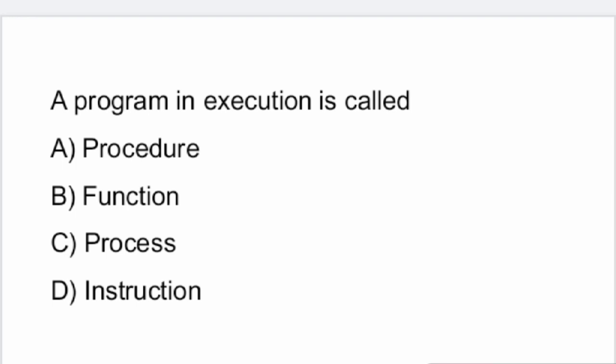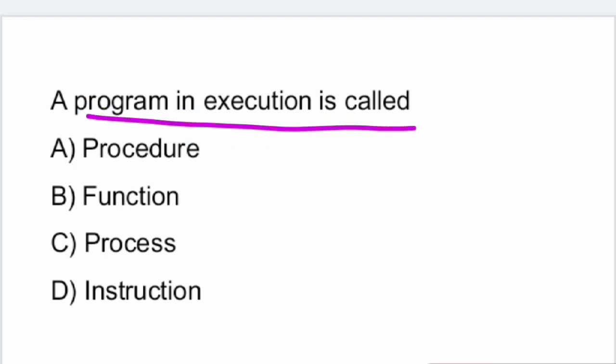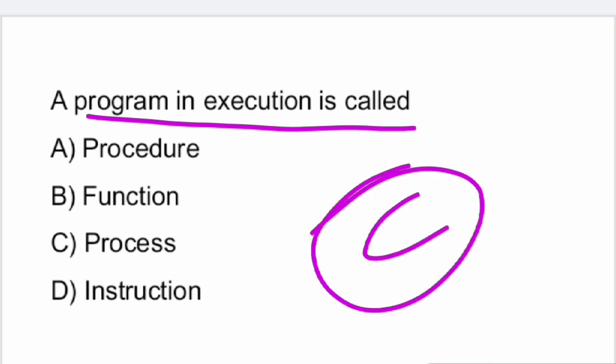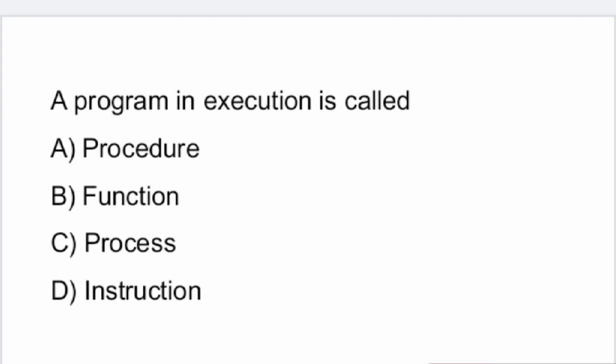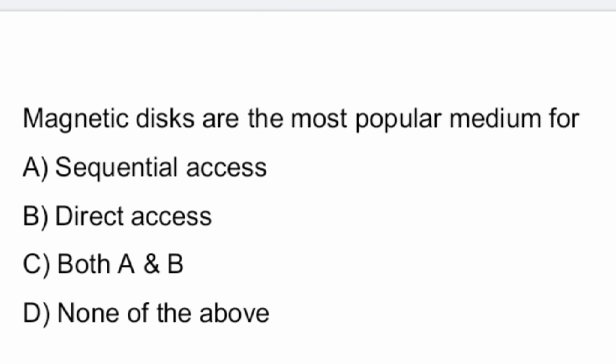Next question: a program in execution is called as what? A program in execution is called a process. That is option C.